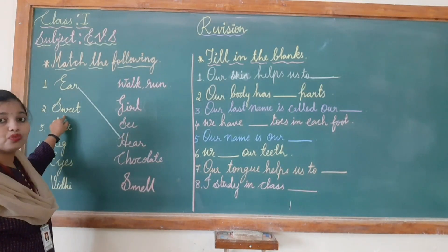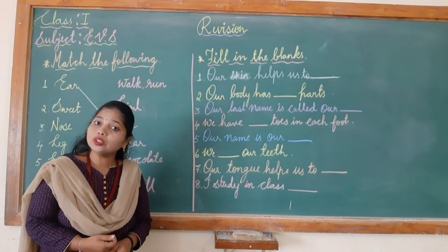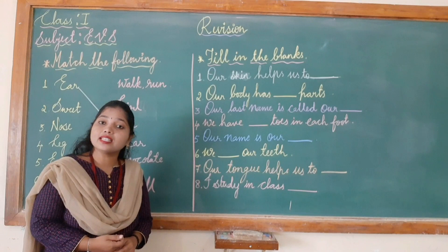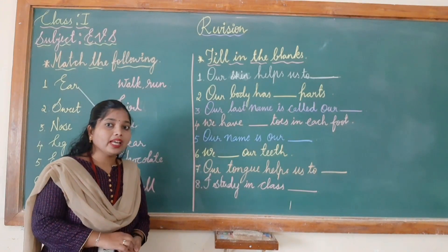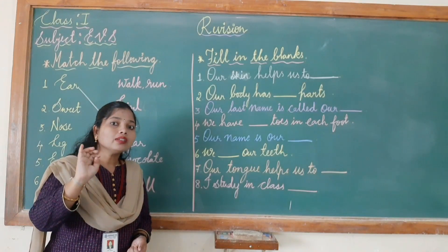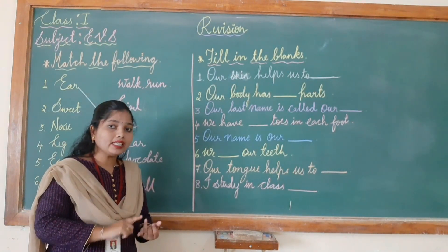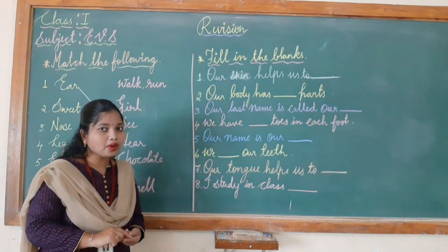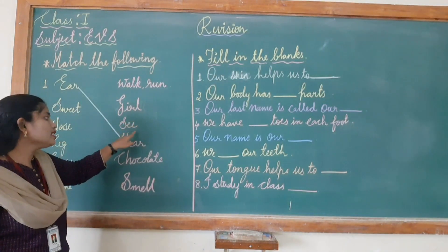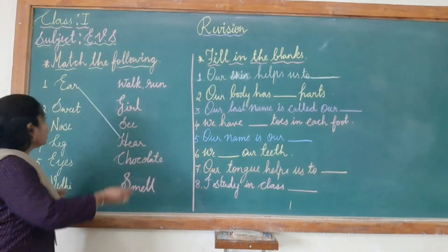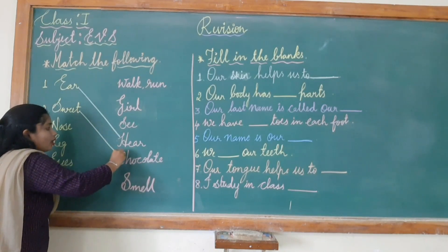Next is sweet. Sweet means what, children? We have learned about sweet — in tongue, we have learned about sweet. There are four kinds of taste: sweet, sour, bitter, and salt. So I am matching sweet with chocolate.